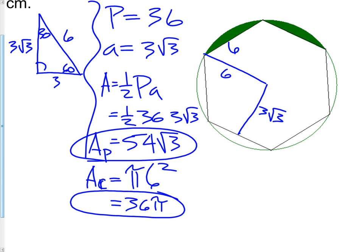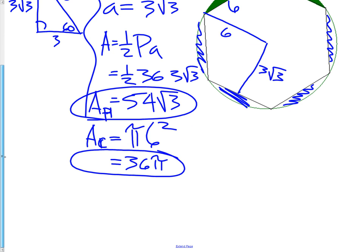I now have the circle area and the hexagon area. What I need to do is subtract: that will give me the measurements of all the green pieces around the outside. Then if I divide that out, I'll get down to the two that I need. First, let's just get the remainder: take the area of the circle, which is 36 pi, and subtract the area of the hexagon, which is 54 root 3. We get 19.56. I would suggest leaving this on your calculator without clearing the screen, so we get much more exact answers.